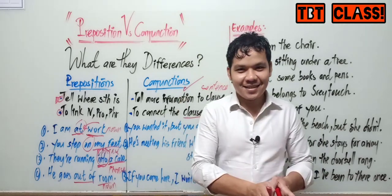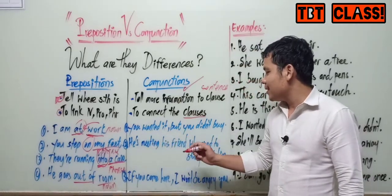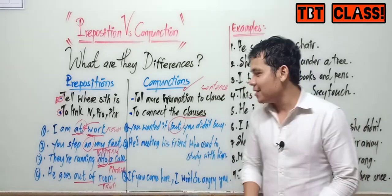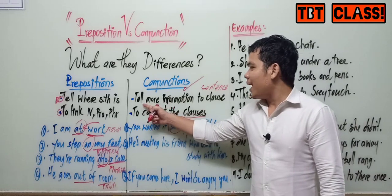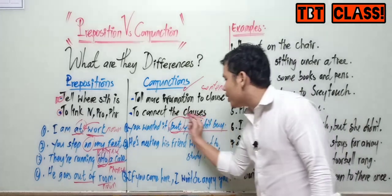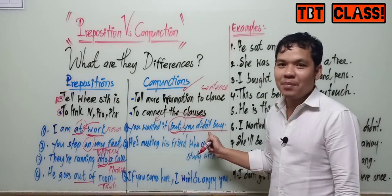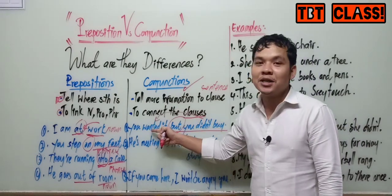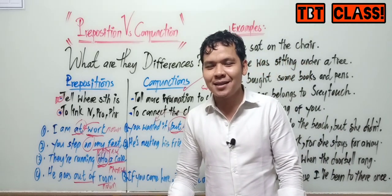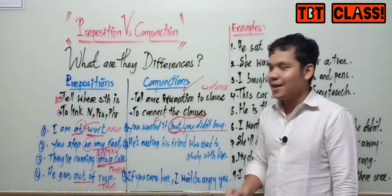Look at example number one: "You wanted it but you didn't buy." "But" is a conjunction. It connects two clauses — "you wanted it" and "you didn't buy." I used this conjunction to give more information: I wanted that phone but I didn't buy because I didn't have enough money. This is a conjunction.